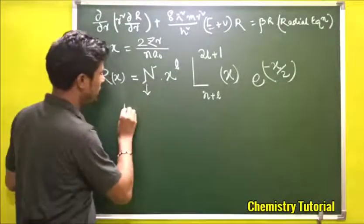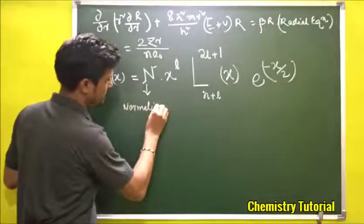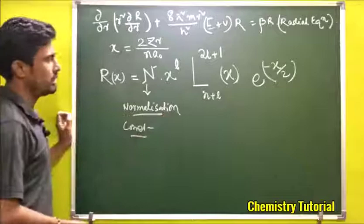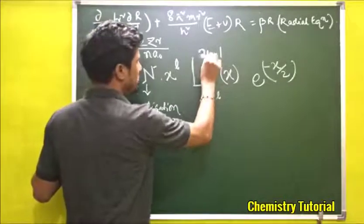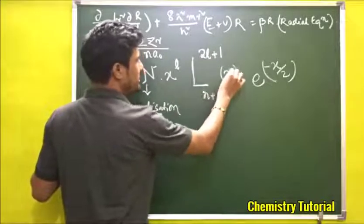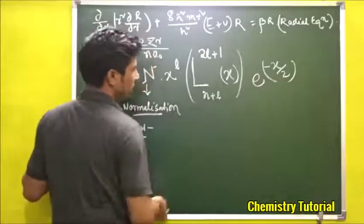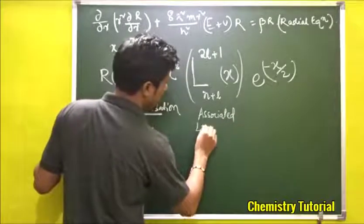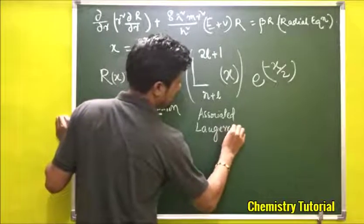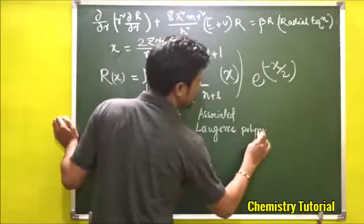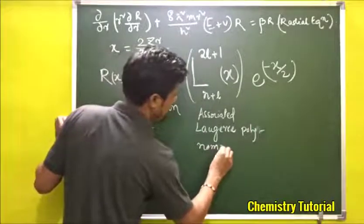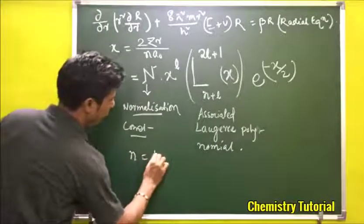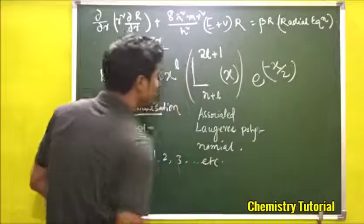Here N is the normalization constant, whose value we will see shortly. The term L with superscript (2l+1) and subscript (n+l) as a function of x is called the associated Laguerre polynomial. Here n ranges from 1, 2, 3 and is called the principal quantum number.